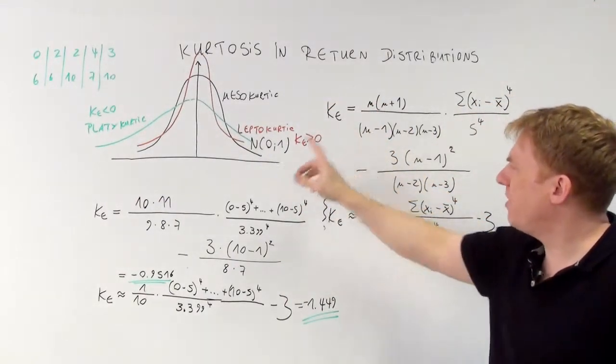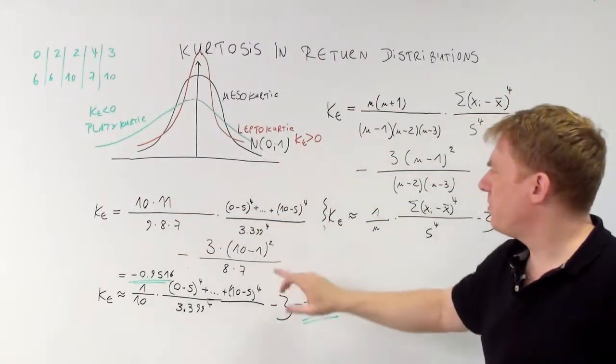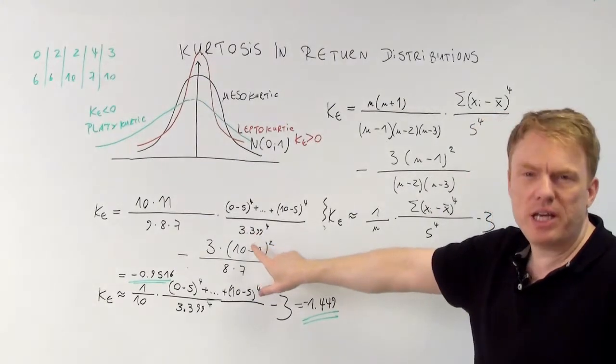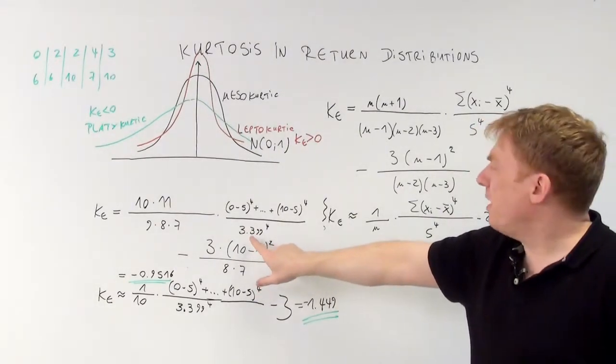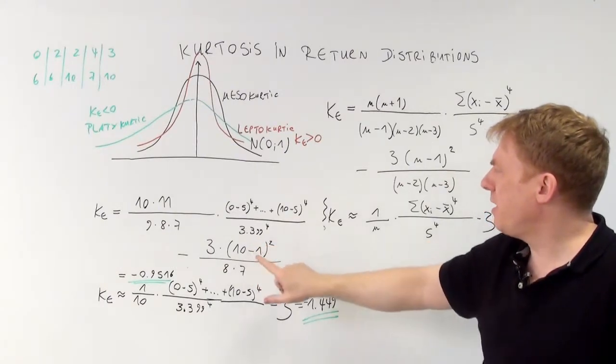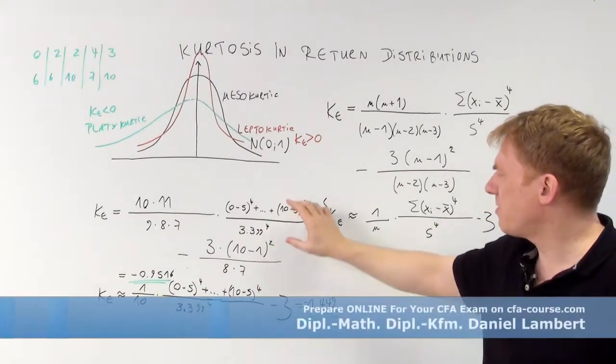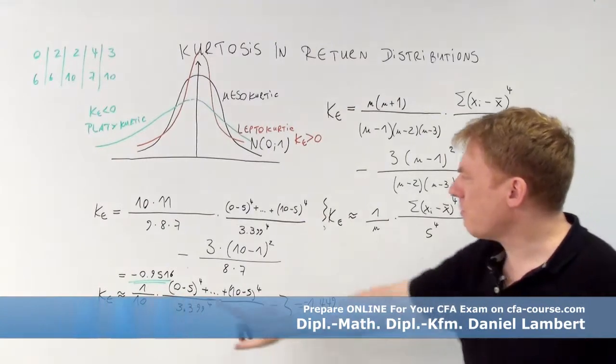The sample size is equal to 10. For example, the standard deviation, as we computed already, is 3.399 to the power of 4. We get the number...